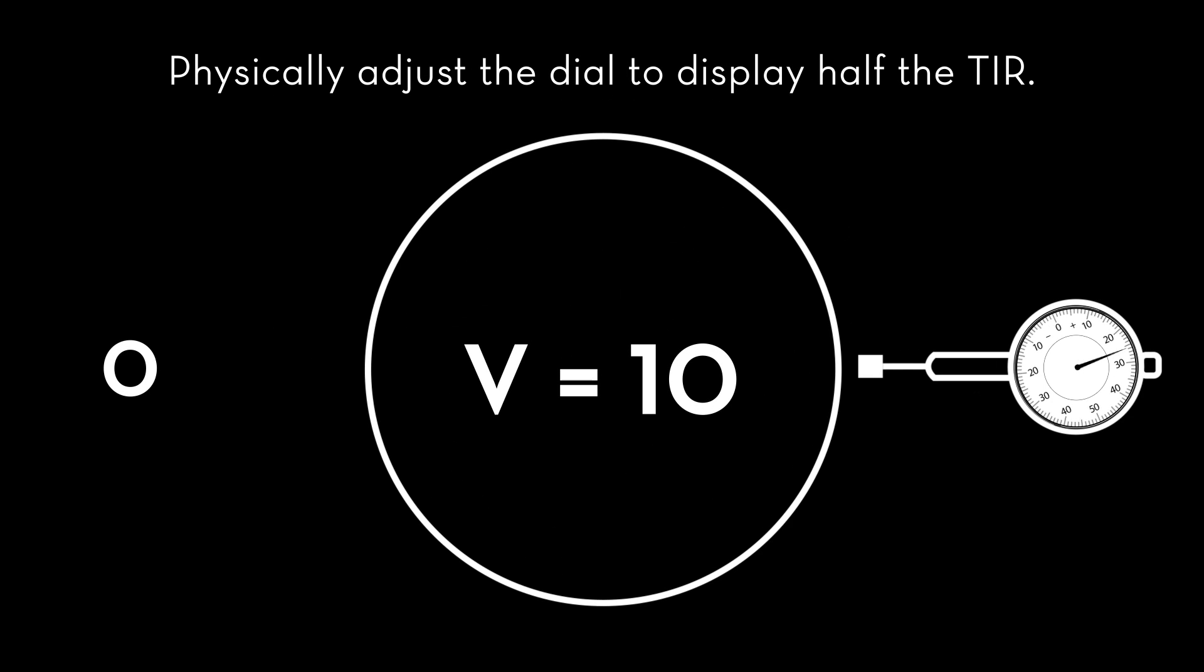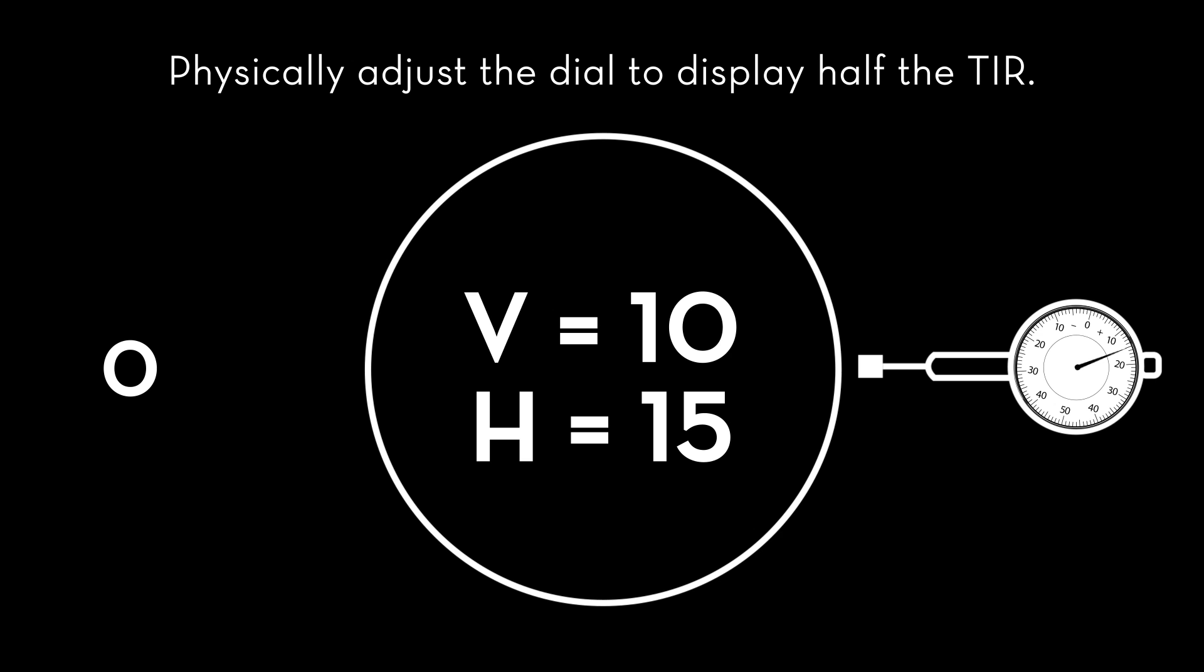Innovation: Set the dials to zero at 9 o'clock and rotate to 3 o'clock. Physically adjust the dial to display half the TIR.